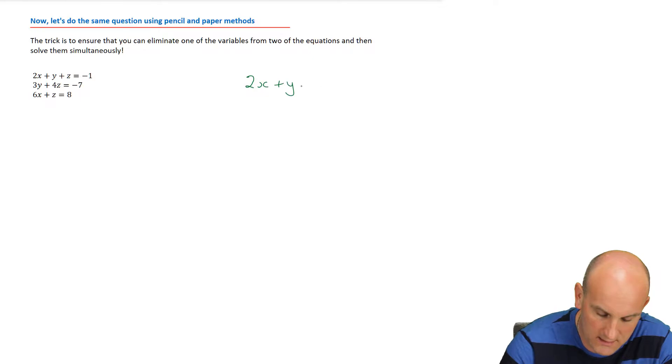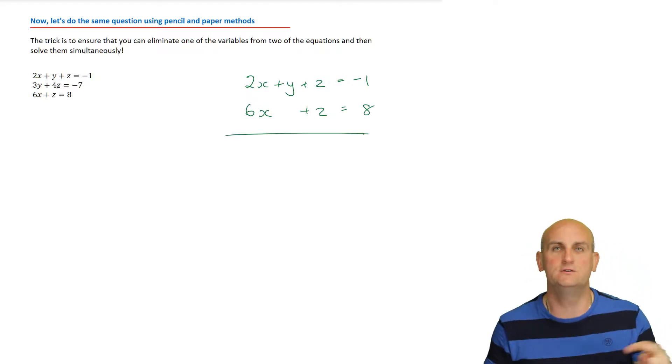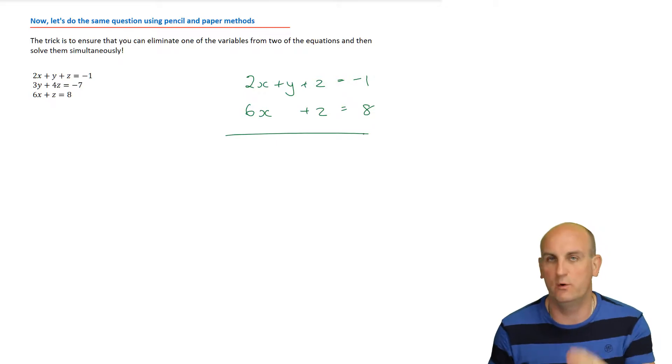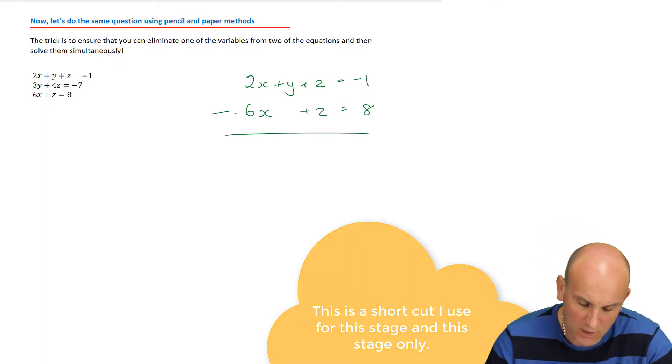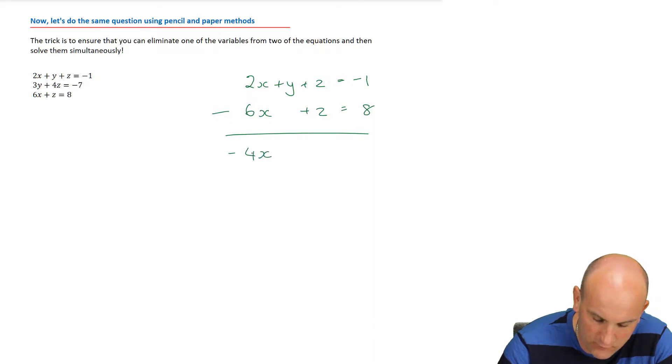So the first thing I've got 2x plus y plus z equals negative 1, that's equation number 1, and I'm going to write underneath it 6x plus z equals 8. I'm going to draw a line. The reason I've written those two equations is I saw that both of those had z's in them and I know that I can eliminate those z's by in this situation subtracting them. Why is it subtracting? Well because a plus and a plus in front of those z's would normally be a plus, and in this stage only it becomes a minus.